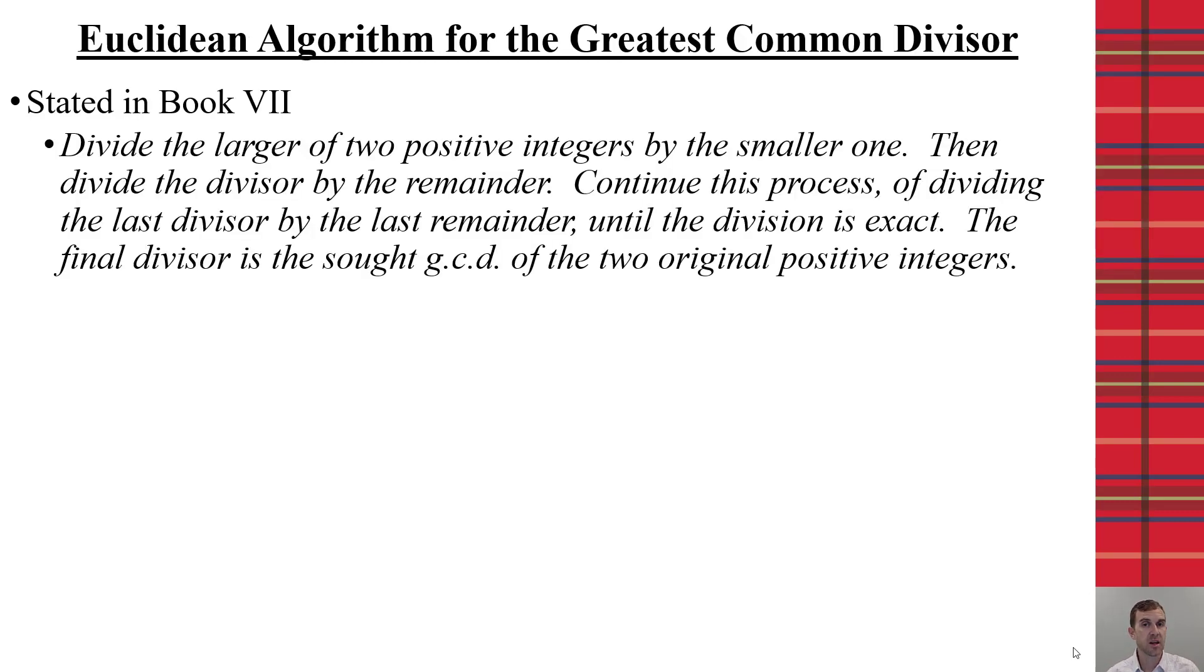Now, one concept that Euclid is explicitly given credit for is the Euclidean algorithm for the GCD. This is written about in Book 7, where he states that if you take two positive integers, you divide the larger by the smaller.